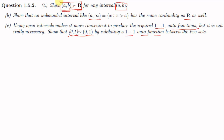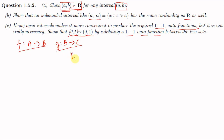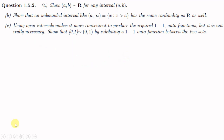We know that if f is a function from A to B and g is a function from B to C, both one-to-one and onto, then the composition h = g∘f from A to C is also one-to-one and onto. We will use this idea to show that (a,b) is similar to ℝ.